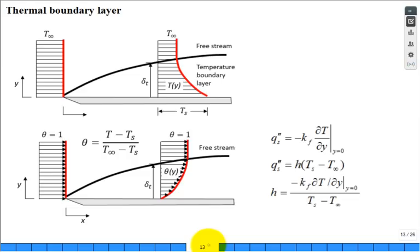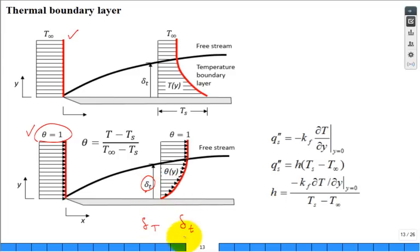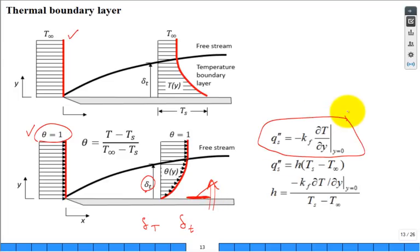Here's a summary of the thermal side. Theta equals one far away in the free stream, and the thermal boundary layer delta_T grows with x. At the surface there's a stagnant layer of fluid. The only way heat moves through that stagnant layer is by conduction, described by Fourier's law. We're really interested in getting heat into the fluid.